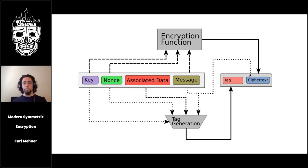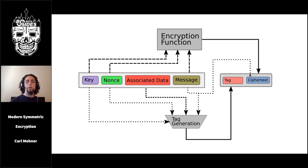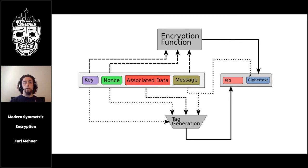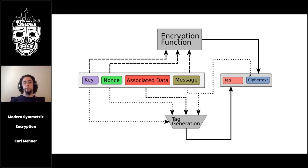With unauthenticated encryption, the decrypt function always outputs a block or stream of ciphertext — it's up to the application to validate and reject bad data. With authenticated encryption, there are only two options for output: either the actual plain text, or an error saying the input was bad. This error occurs if somebody changes any of the inputs — ciphertext, the tag, initialization vector, or associated data — ensuring the integrity of the plain text is maintained.